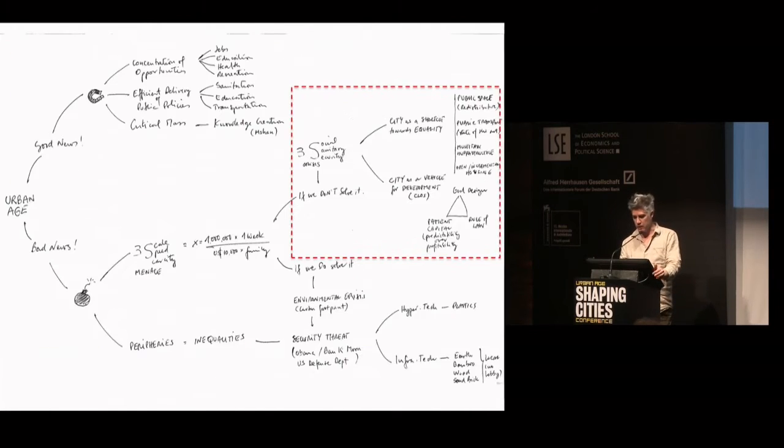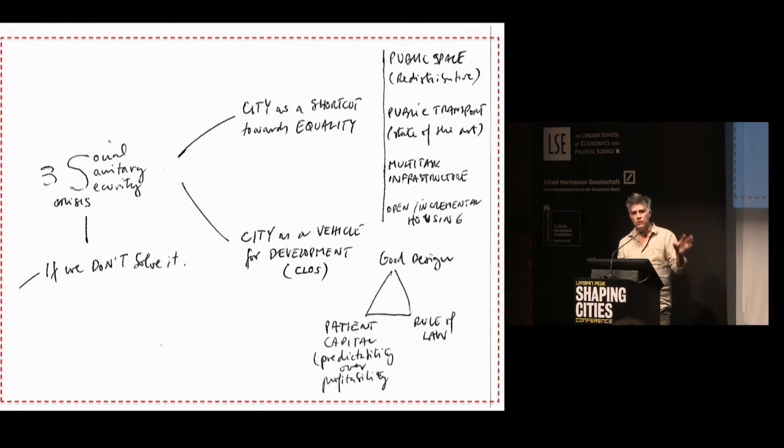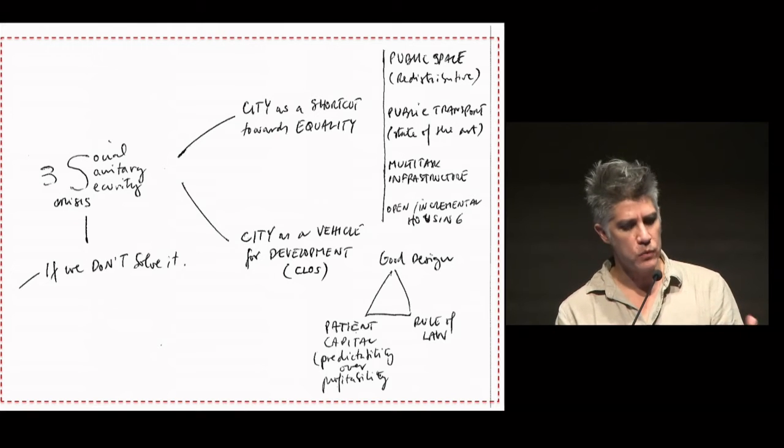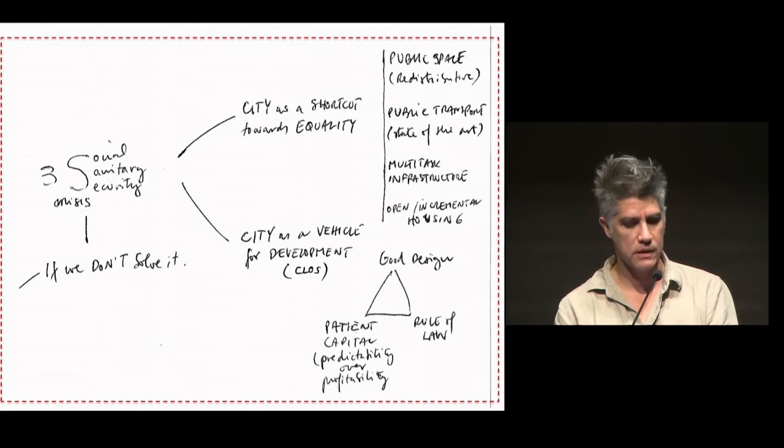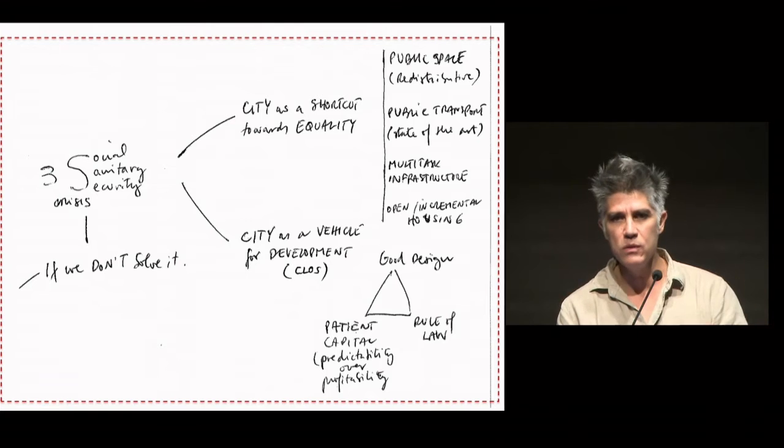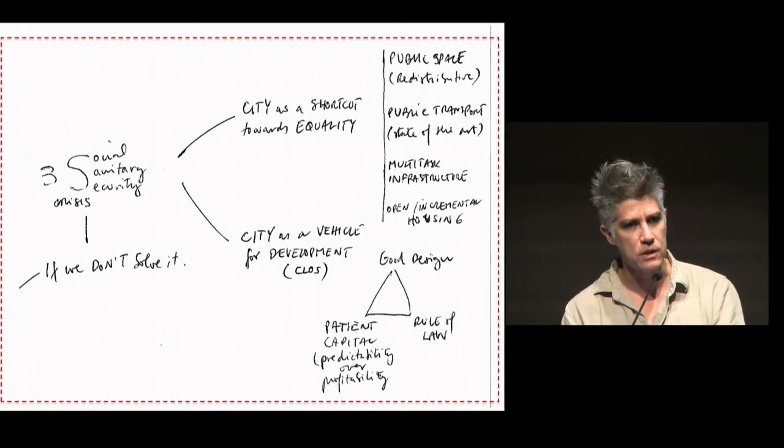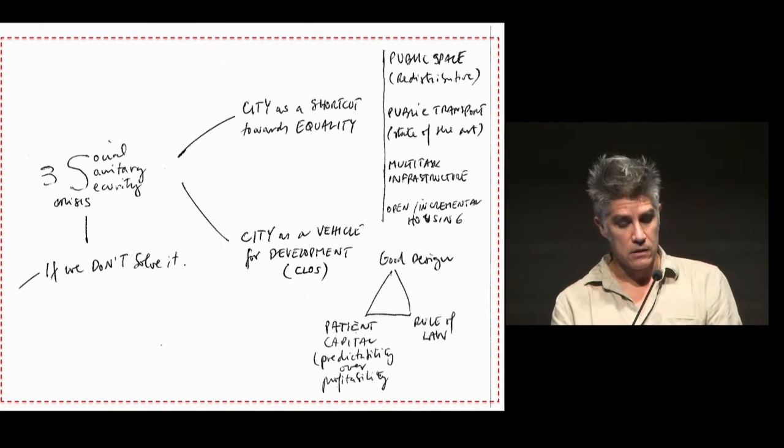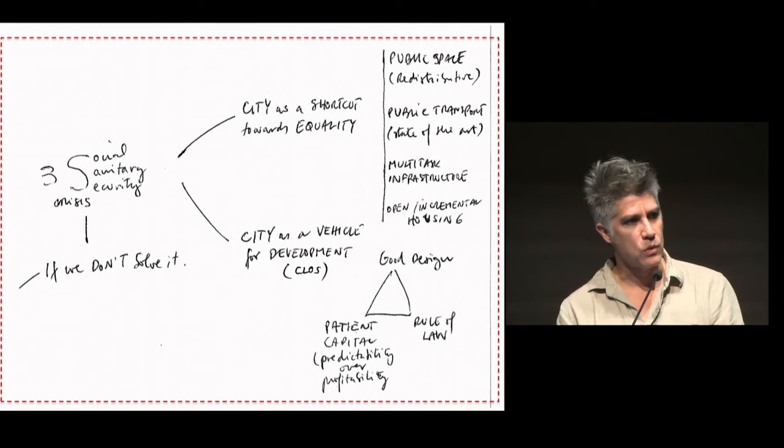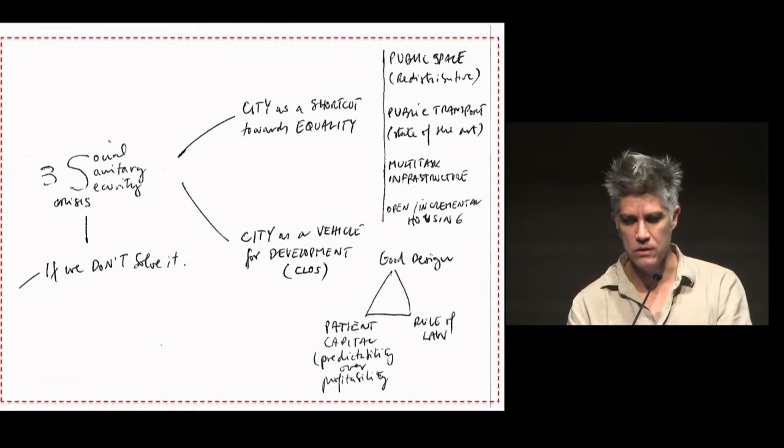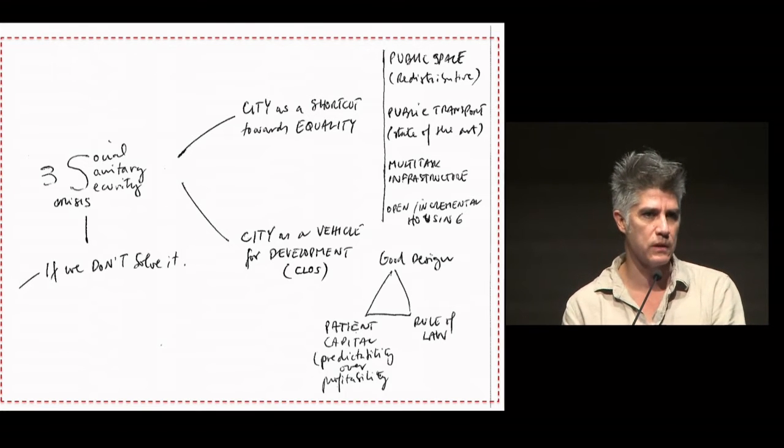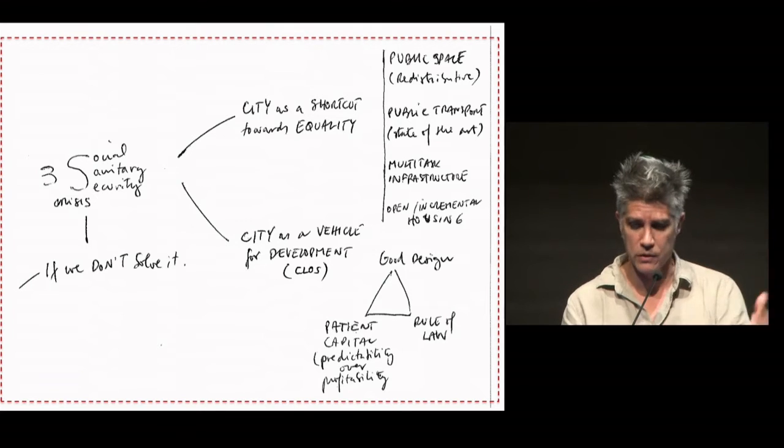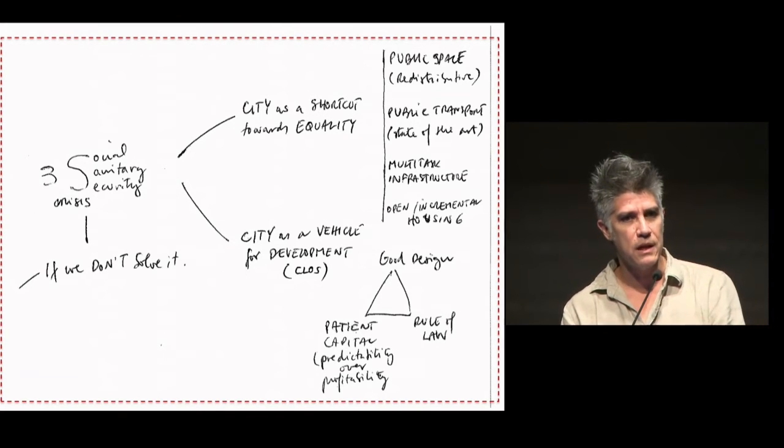In any case, if we concentrate on the one side of the 3S menace, if we don't solve the 1 million people city per week, with $10,000 per family, we have a problem. And the problem will mainly come from this 3S crisis, a social crisis, a sanitary crisis, and a security crisis. People will not stop coming to cities. They will come anyhow, but they will live in awful conditions, in formal settlements, in slums, and favelas. So this crisis of not being able to respond properly to the migration towards cities is one big issue.